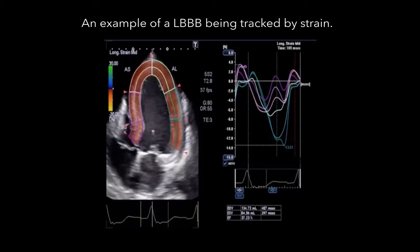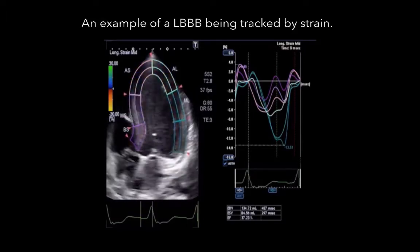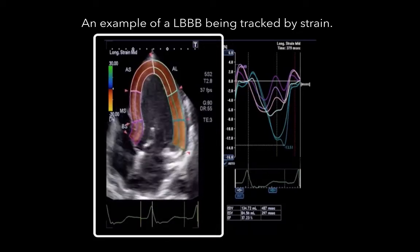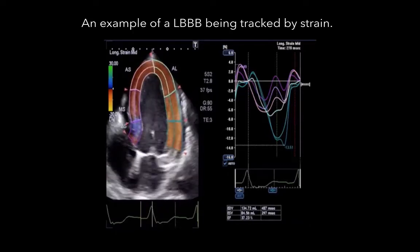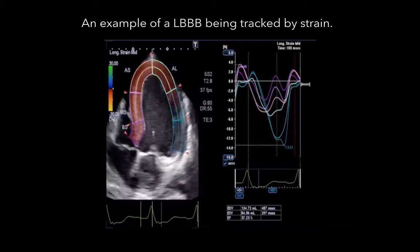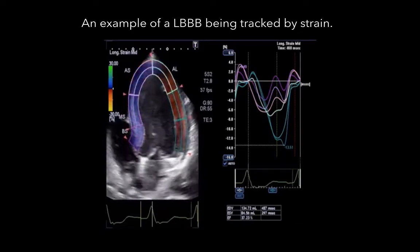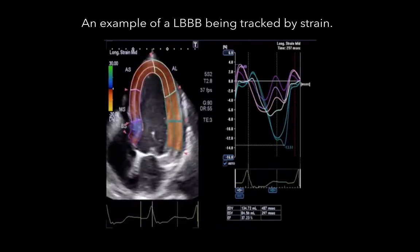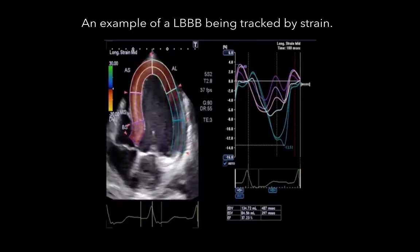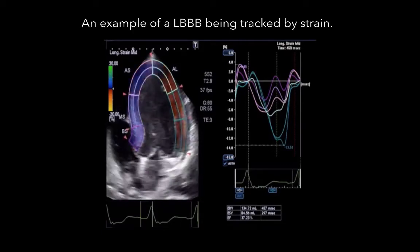This is an example of LBBB tracked by strain to highlight the pattern of contraction. Note how the red — representing contraction — progresses from the septum on the left to the inferolateral wall on the right, representing the LBBB effect on ventricular contraction. In this case, the pattern likely represents solely the bundle branch block rather than true hypokinesis of the septum. The key message is to always refer back to the patient's rhythm and QRS when interpreting echo, using the monitor or EKG leads on the echo machine.